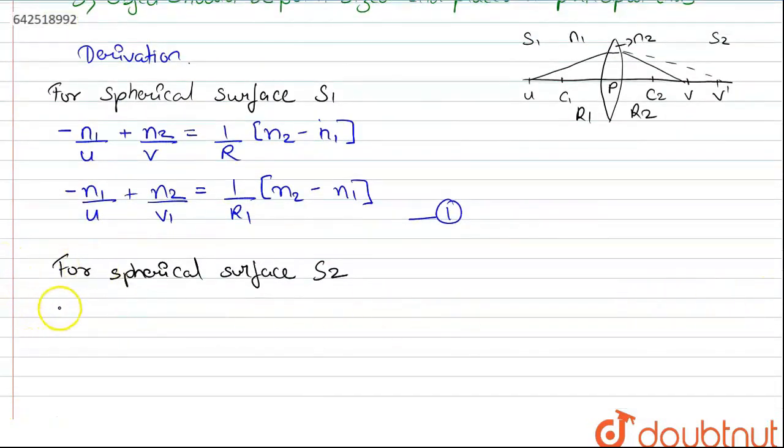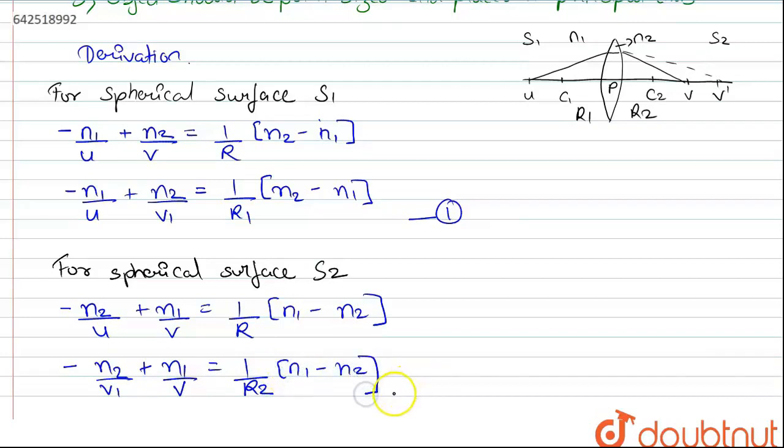Similarly, for spherical surface S2, the light travels from denser medium to rarer medium, hence the mediums here will be interchanged but the formula will remain same, which becomes minus N2 by U plus N1 by V equals 1 upon R into N1 minus N2. Substituting the values we get minus N2 by V1, because of V1 we are getting image, plus N1 by V equals 1 upon R2 into N1 minus N2. This becomes our second equation.